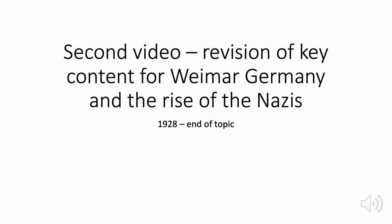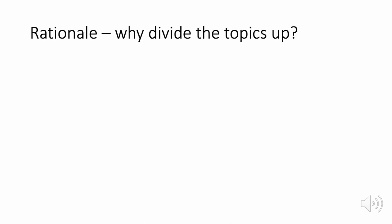Hello and welcome to the second video in our Weimar content series. Today we're going to be finishing off and revising the remaining key content for Weimar Germany and the rise of the Nazis, from 1928 onwards to the end of the course. The rationale for this is that we are carrying on from where we left off last time with the Wall Street Crash, which is the key turning point in the period.